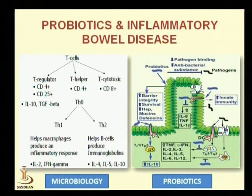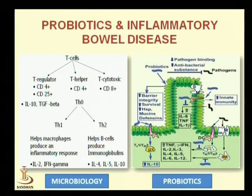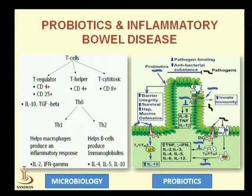As shown in the right-hand side diagram, probiotic microorganisms inhibit the entry of pathogenic microorganisms into the epithelial cell, or they enter the epithelial cell and activate dendritic cells and T cells to produce anti-inflammatory components like interleukin-10. Probiotics also control the pathways by which pathogenic microorganisms produce inflammatory components like interleukin-2 and tumor necrosis factor.